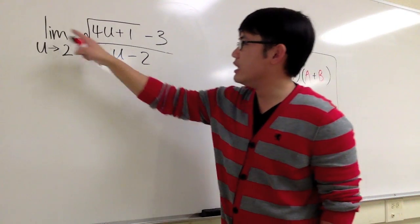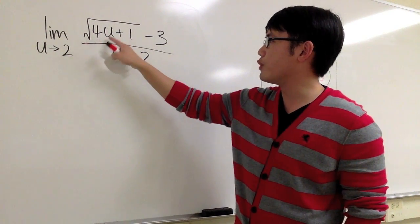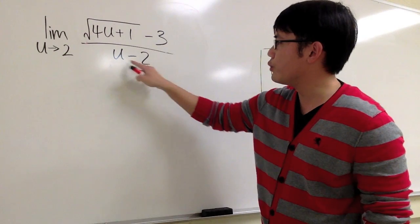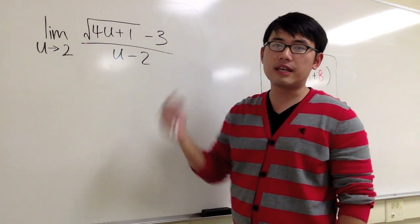Let's look at this limit, the limit when u approaches 2, and here we have square root of 4u plus 1, minus 3, over u minus 2. Notice that 4u plus 1 right here is inside of the square root.